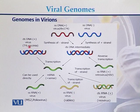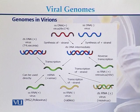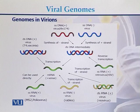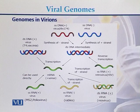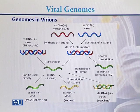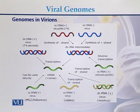Examples of double-stranded DNA viruses include T4 and vaccinia. In summary, viral genomes can be DNA — either single-stranded or double-stranded — or RNA, which can be single-stranded with a positive strand or a negative strand.